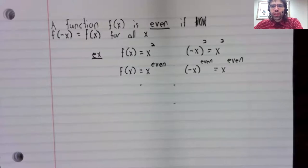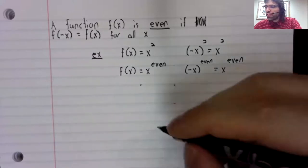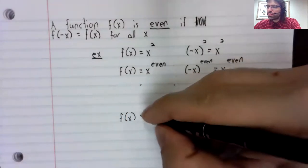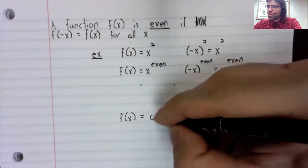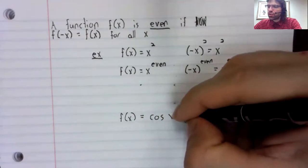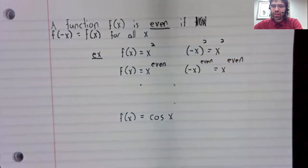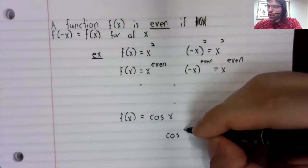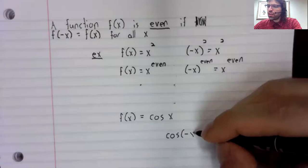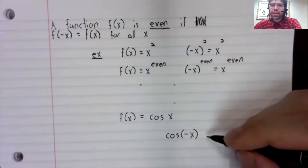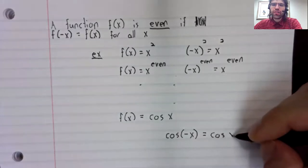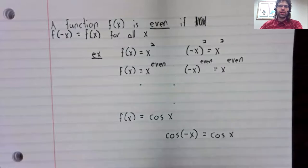And now an example more relevant to what we've been discussing. The cosine function is even. That is to say, if you ever have the cosine of negative x, that's the same as having the cosine of positive x.